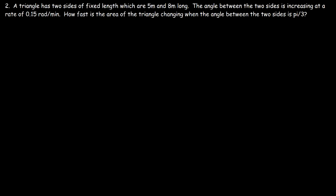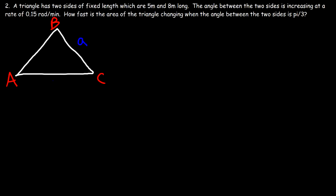So let's draw a picture first. We don't have a right triangle, so we're going to draw a generic triangle with angles A, B, and C. Across angle A we have side a, across angle B is side b, and here we have side c. For this particular triangle we have the formula: the area is equal to one-half AB sine of angle C, where capital letters represent angles and lowercase letters represent sides.